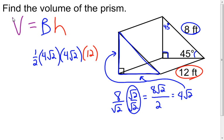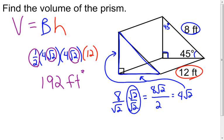Root two times root two is two, and then times one-half is just one. So everything I have circled in purple is essentially gone. Now I can do four times four, which is 16, and then take 16 and multiply it by 12. I find out that the volume is 192, and the label was feet, so cubic feet. I would be able to find 192 one-foot by one-foot by one-foot cubes inside of that prism.